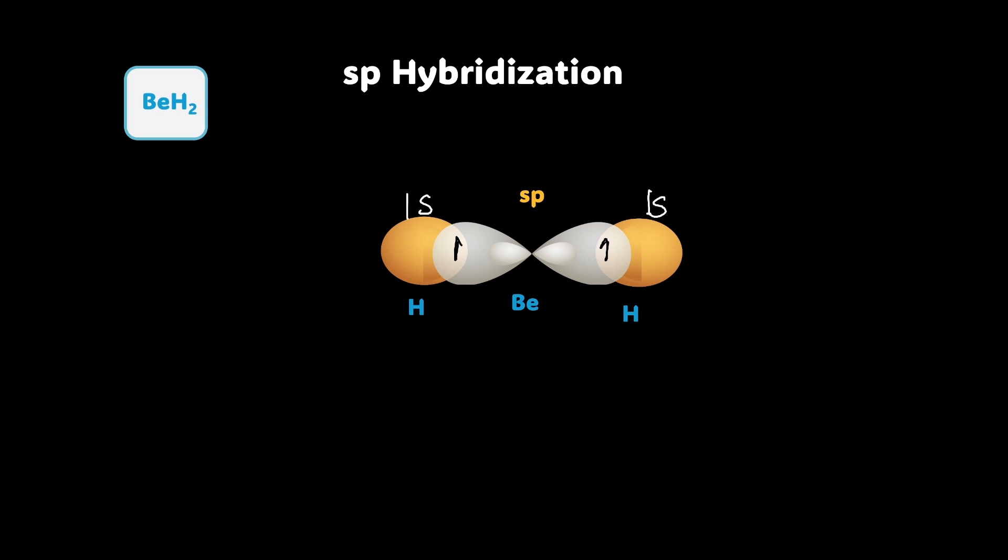So this is one sigma bond and this is the second sigma bond. And because these two sp orbitals are pointing in exactly opposite directions, a 180 degree angle is observed between them. So this angle out here is 180 degree. We can simply write it like this, BeH2. So BeH2 molecule is perfectly linear. It's simple, straight and stable. Now let's move on to the next one.